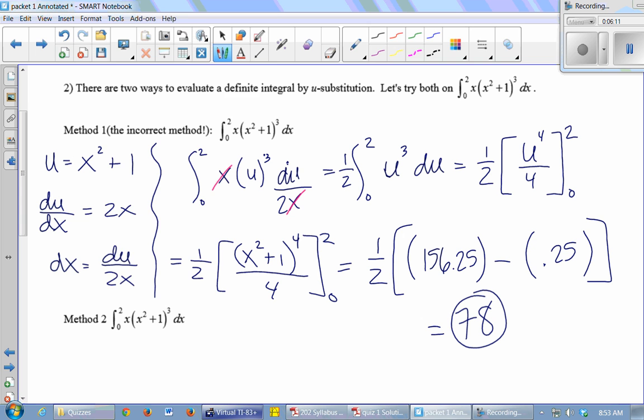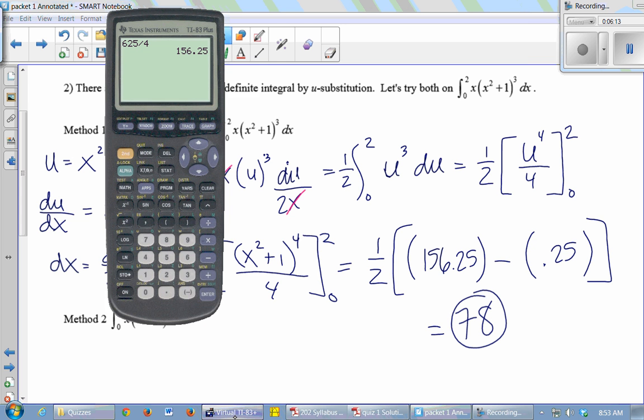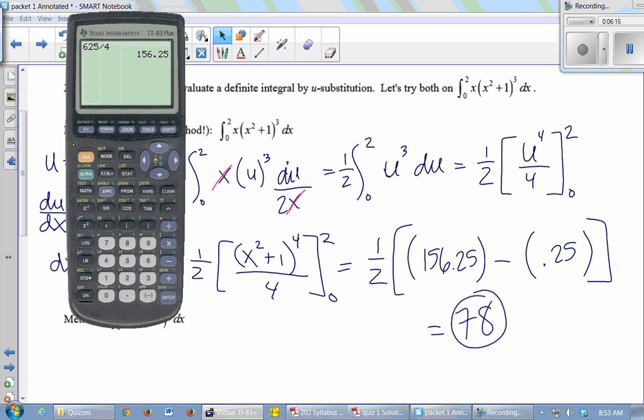And we should check. We can just have our calculator do this integral. Math, function integration, put the function first. x times (x² + 1)³, comma x, comma 0, comma 2. 78. Okay good, we did it right.